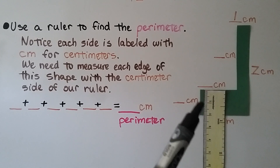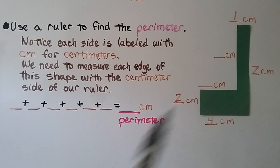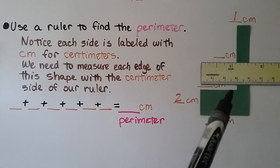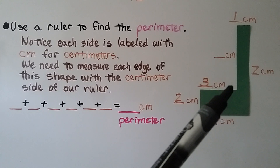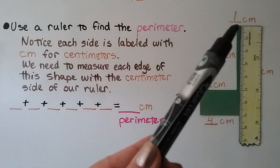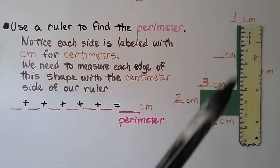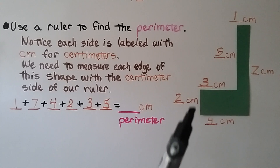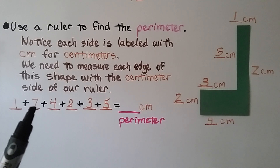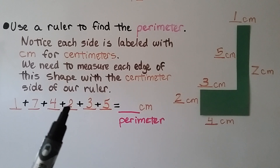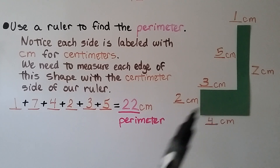We measure the small piece — lining up our ruler, we see it's about 2 centimeters. Then we measure the next part, from corner to corner, and it's 3 centimeters. For the last part, we go from this corner to the top — lining the ruler up from corner to zero, we see it's at 5, so this side is 5 centimeters. Now that we've measured every side, we add: 1 plus 7 is 8, plus 4 is 12, plus 2 is 14, plus 3 is 17, plus 5. The perimeter for this shape is 22 centimeters.